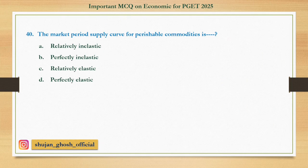Question number forty: The market period supply curve for a perishable commodity is — option A: relatively inelastic; B: perfectly inelastic; C: relatively elastic; D: perfectly elastic. Answer: perfectly inelastic.